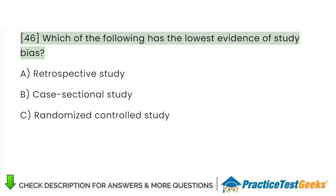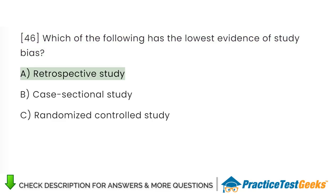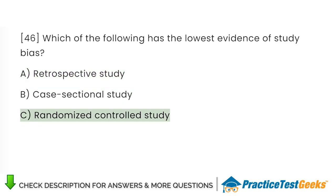Which of the following has the lowest evidence of study bias? A. Retrospective study. B. Case sectional study. C. Randomized controlled study.